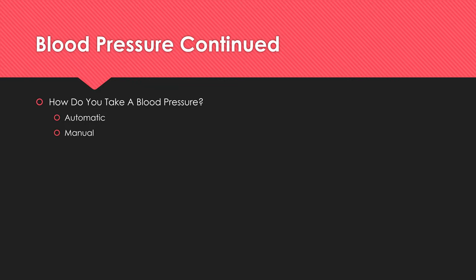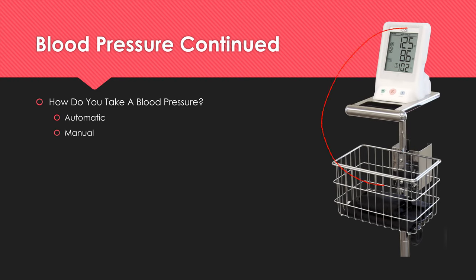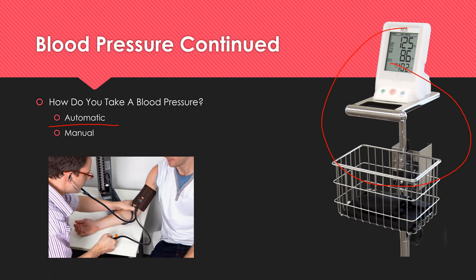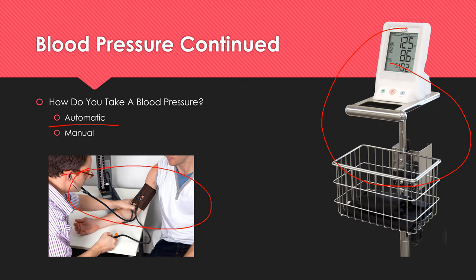How do you take a blood pressure? There are two main ways. First, an automatic blood pressure machine — you strap a cuff, press a button, get a result. Second, manually — common at doctor's offices, using a stethoscope and a sphygmomanometer, pumping it up yourself and listening. There are plenty of tutorials on how to do that specifically.